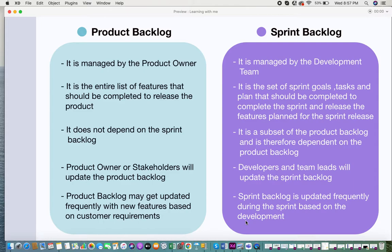When you look at the sprint backlog, it is managed by the development team, because the sprint backlog is given to them and based on sprint updates and progress, the development team keeps updating it. The product backlog consists of the entire set of features that should be completed to really release the product. Your product backlog can have features, modules — it can be anything related to your product.